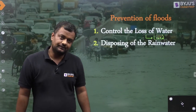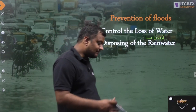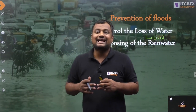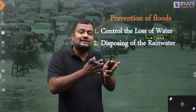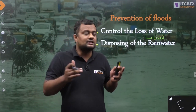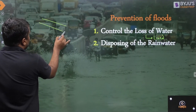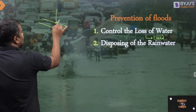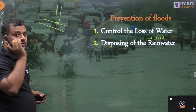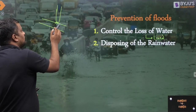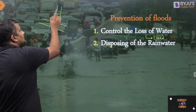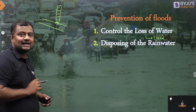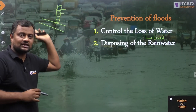Second, disposing of rainwater. Whatever rainwater is coming can be disposed off to drains. Another solution is to make alternative routes — suppose a canal is flowing in one direction, we can make a gate and divert it to another canal. Whenever there is a large amount of flood, some water can be disposed of in that particular direction, which can subsequently be used for irrigation there.